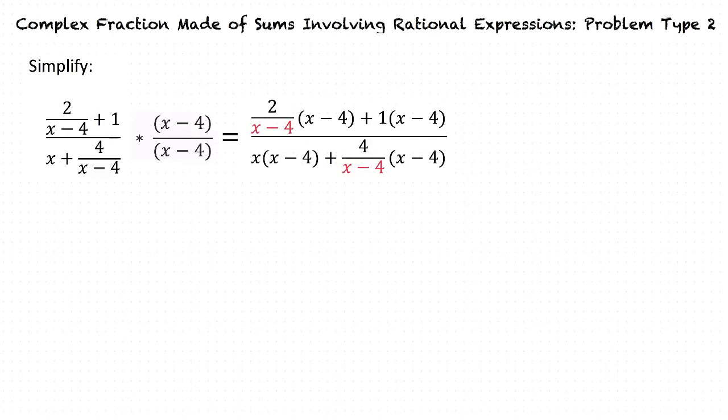What can we do to further simplify? The fractions go away since x minus 4 divided by x minus 4 equals 1, and then we're left with 2 plus x minus 4 in the numerator and x squared minus 4x plus 4 in the denominator.